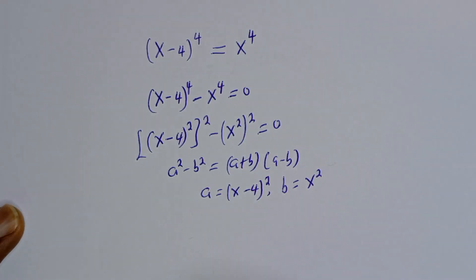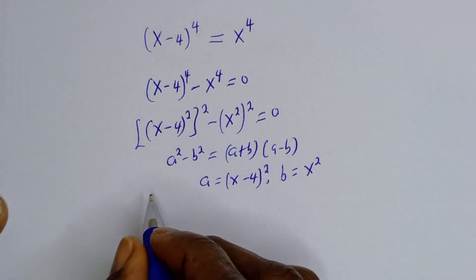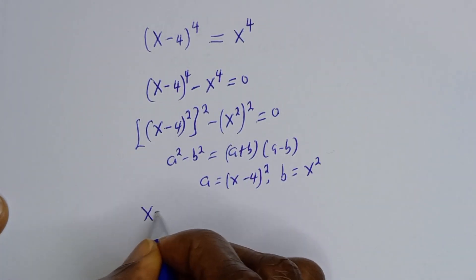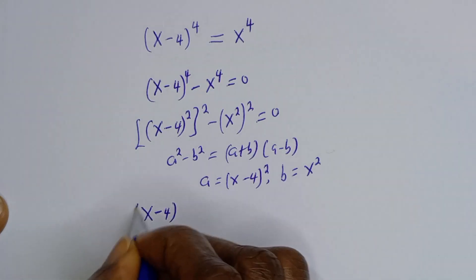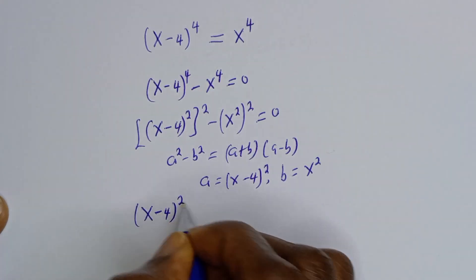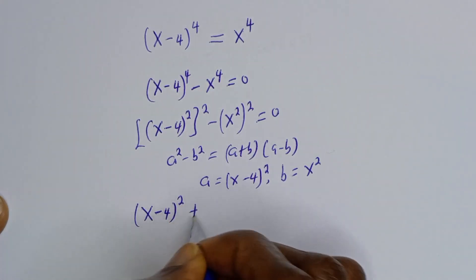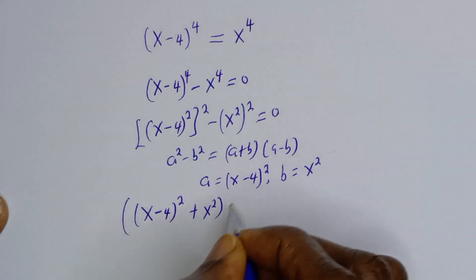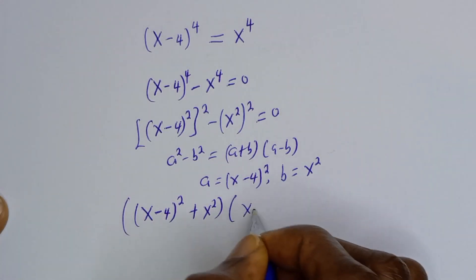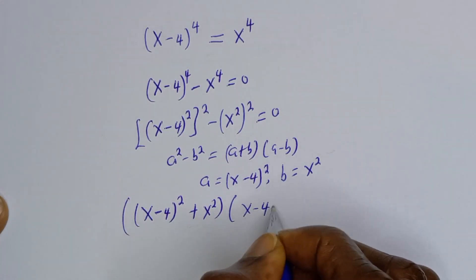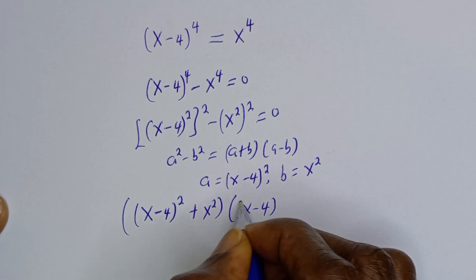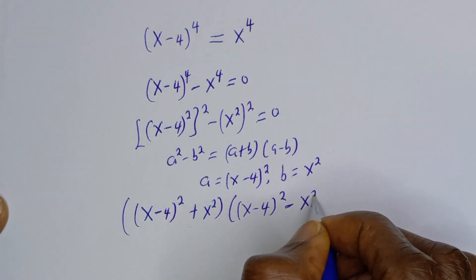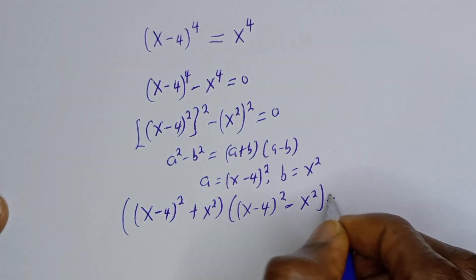Let's substitute. This is S minus 4 squared plus S squared, bracket S minus 4 squared minus S squared, is equal to 0.